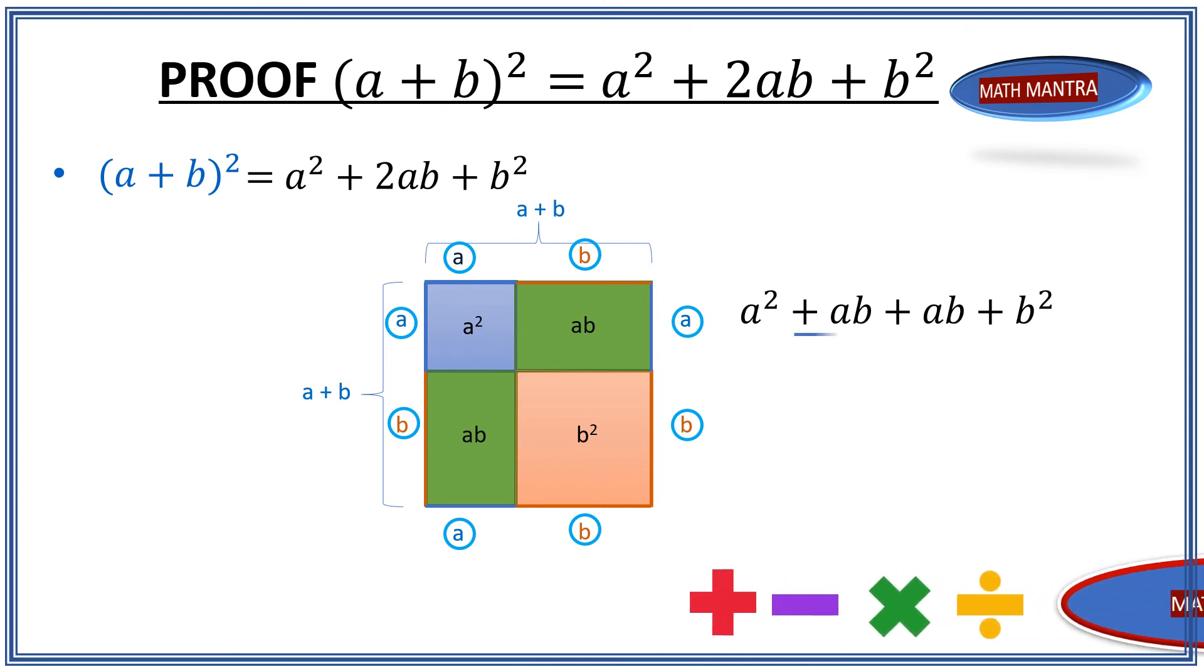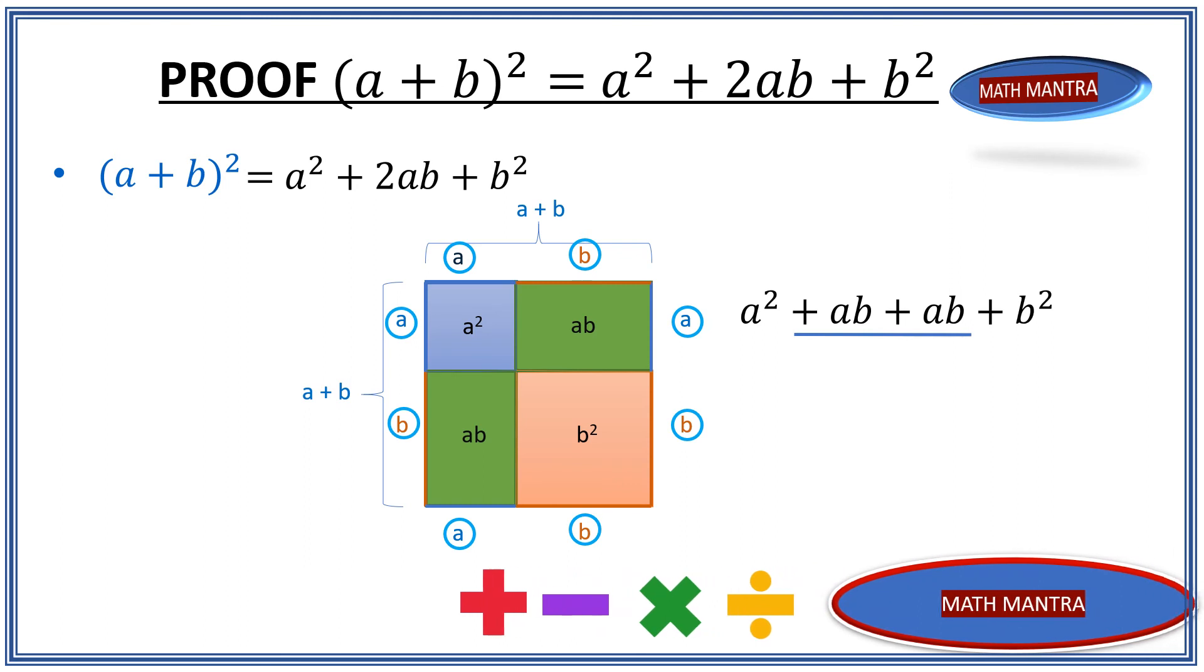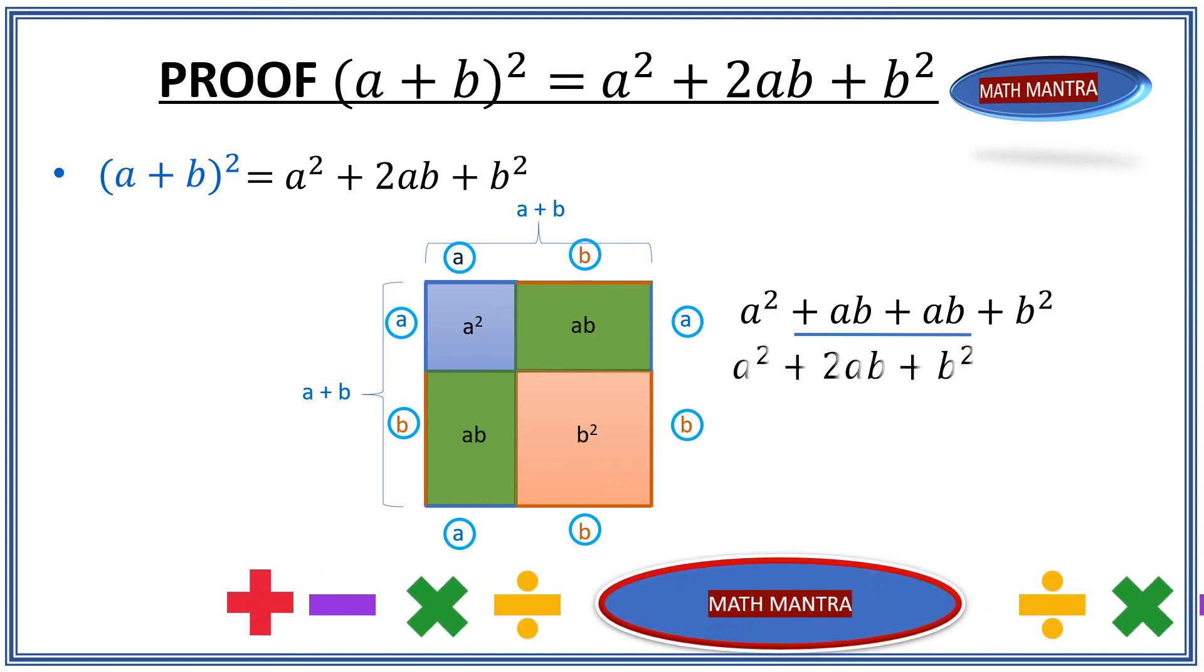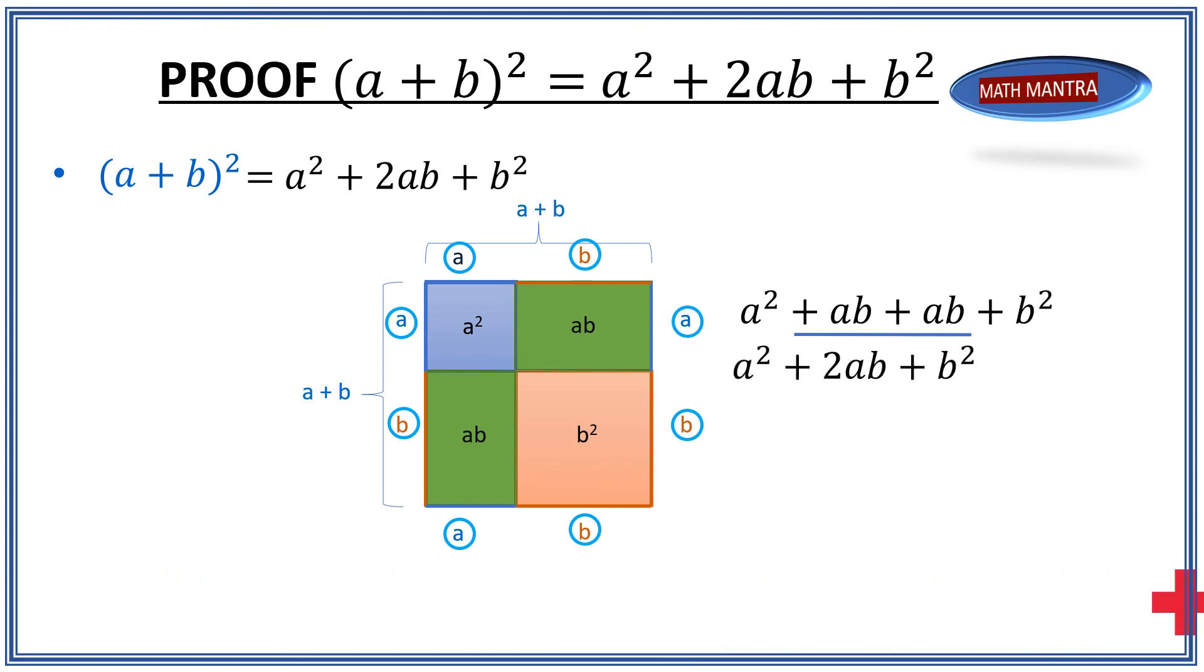Now a times b we have added two times, so let's simplify that equation: a² plus 2 times a times b plus b².